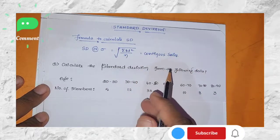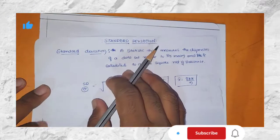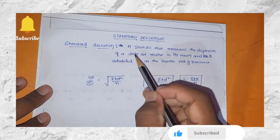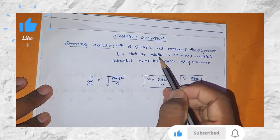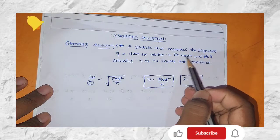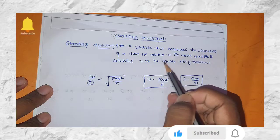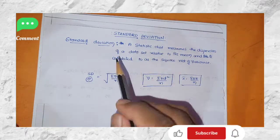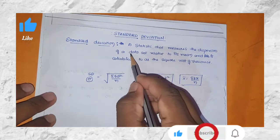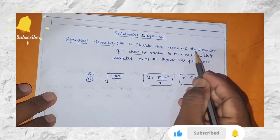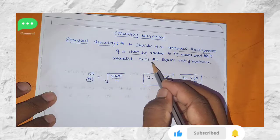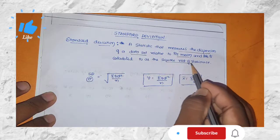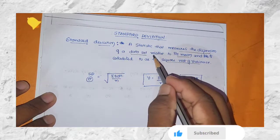First, we will understand the concept. Standard deviation is a statistic that measures the dispersion of a data set relative to its mean, and is calculated as the square root of variance. We will look at the mean and the square root of variance.